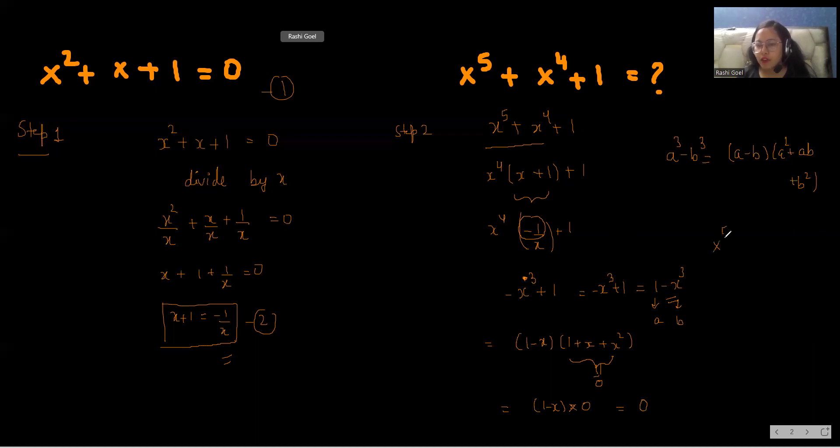So what is left is 1 minus x multiply by 0. After multiplying with 0 we get 0. So the equation x power 5 plus x power 4 plus 1 equals 0. So this is the solution for this equation.